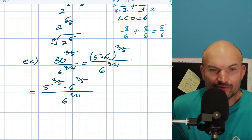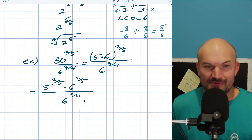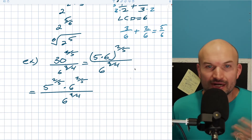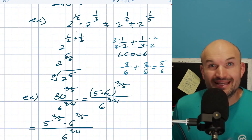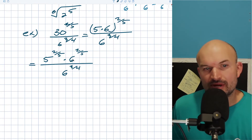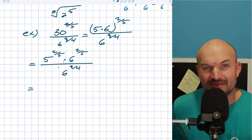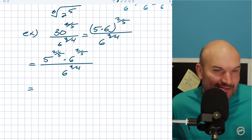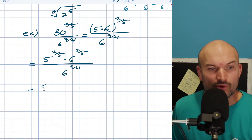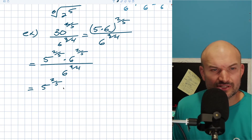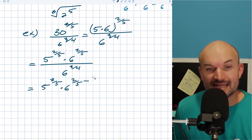Now the only thing I can do here — don't divide out the sixes. We have to apply our rules of exponents. When we were multiplying, we added the exponents. When we are dividing, we now subtract our powers. So this simplifies to 5 to the 2 fifths times 6 to the quantity 2 fifths minus 3 fourths.